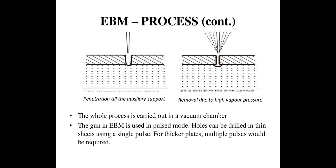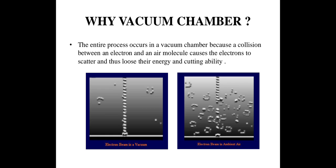The whole process is carried out in the vacuum chamber. EBM is used in pulse mode — holes can be drilled in thin sheets using a single pulse, while for thicker plates multiple pulses are required. The diagram shows the penetration till the auxiliary support. Vacuum is required because a collision between an electron and an air molecule causes the electrons to scatter and lose their energy and cutting ability — that is the main reason for using a vacuum chamber.